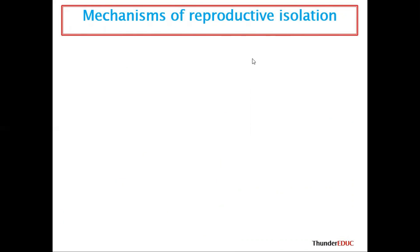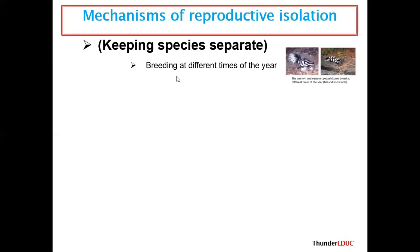What are some of the mechanisms of reproductive isolation? Reproductive isolation means that reproduction has been isolated — organisms have been separated from reproducing. Number one is breeding at different times of the year. This one breeds in fall and this one breeds in late winter, so they can never breed at the same time. They are being separated by the different times of the year.